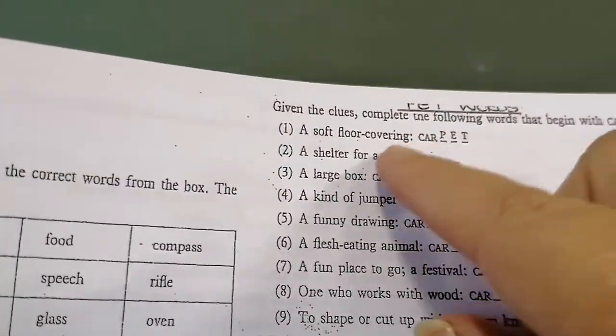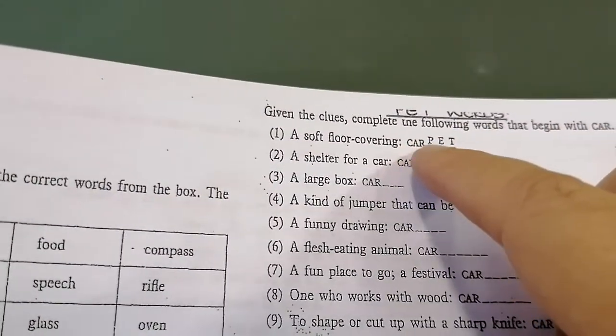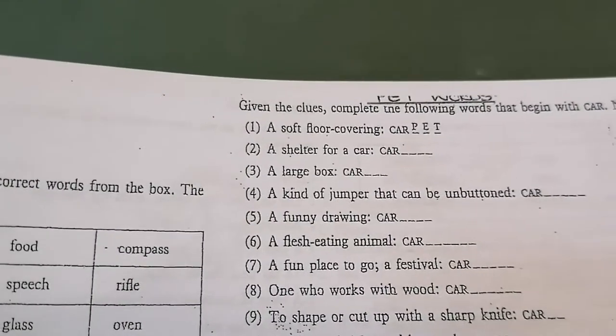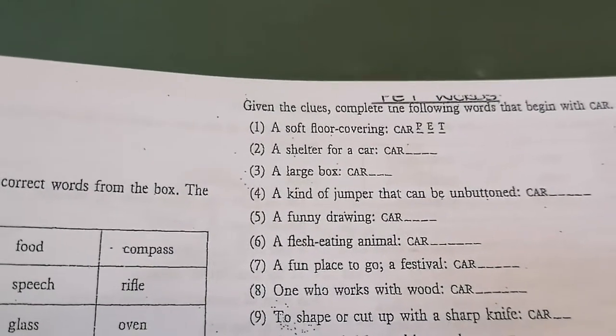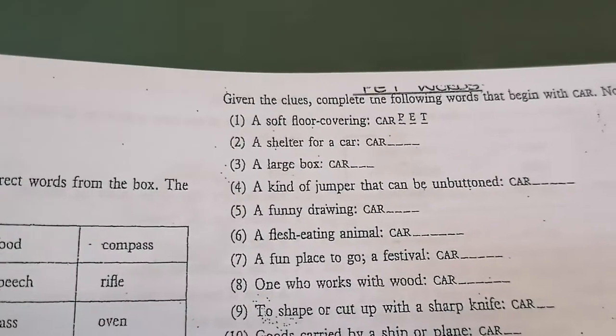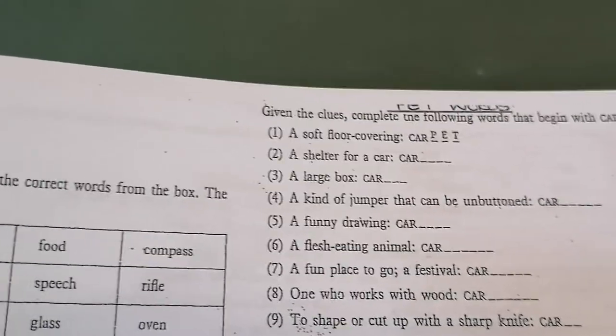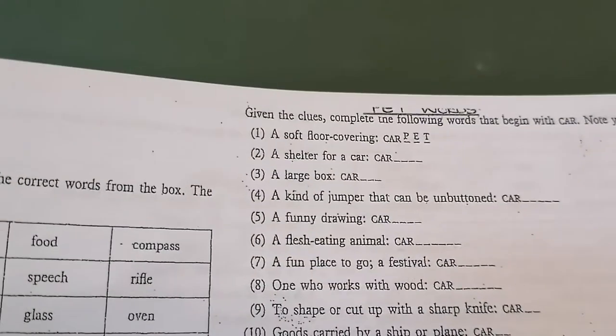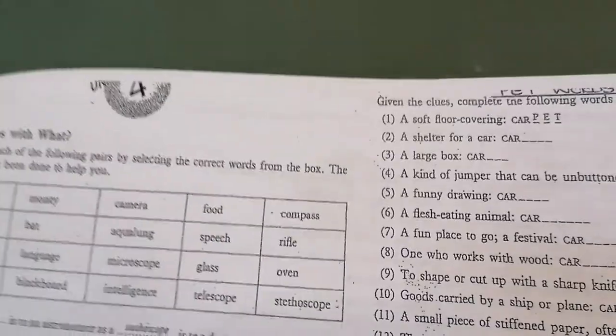Again here in Unit 4, we have more of those little, add the word, but now I've said car. So everyone starts with a car. A soft floor covering is a carpet. A funny drawing cartoon in number 5. Well, there I gave you the answer. It's a cartoon. So do as many of these as what you possibly can for me.